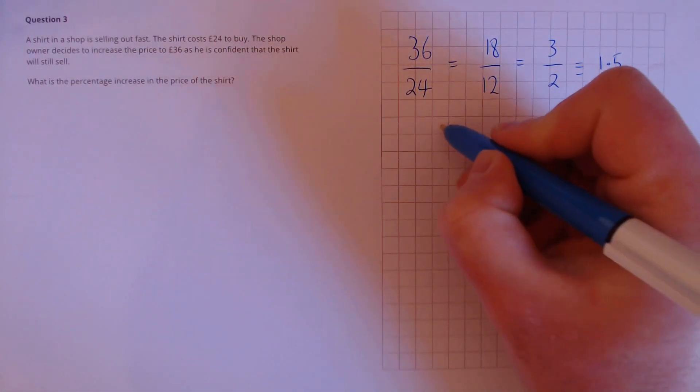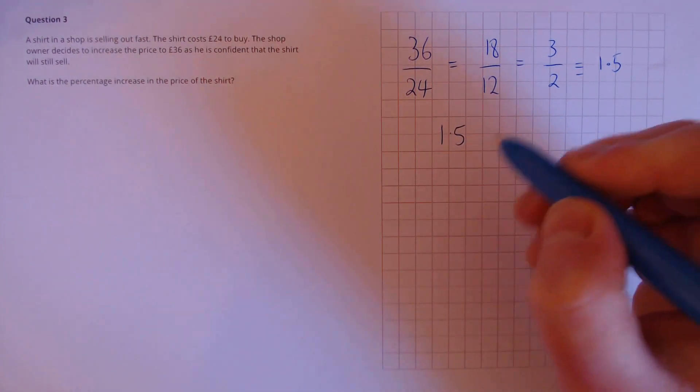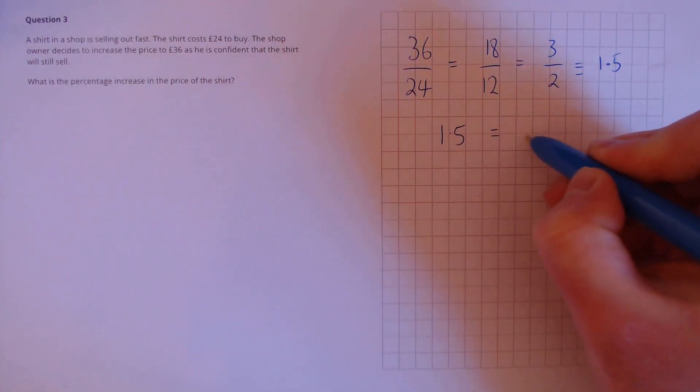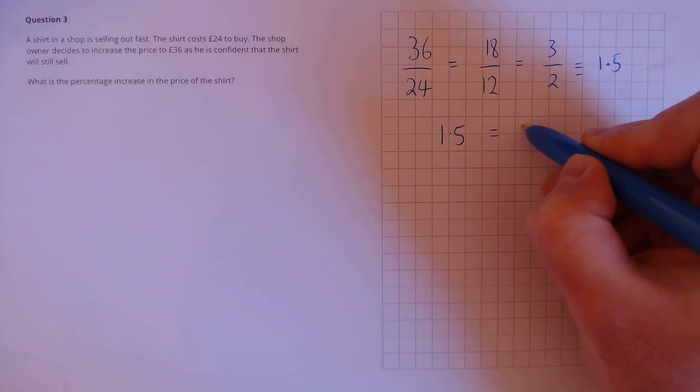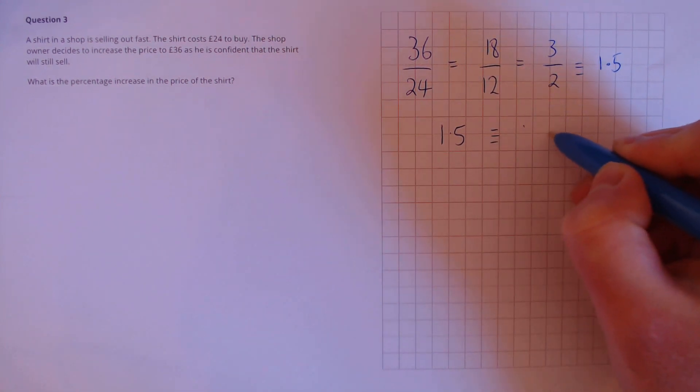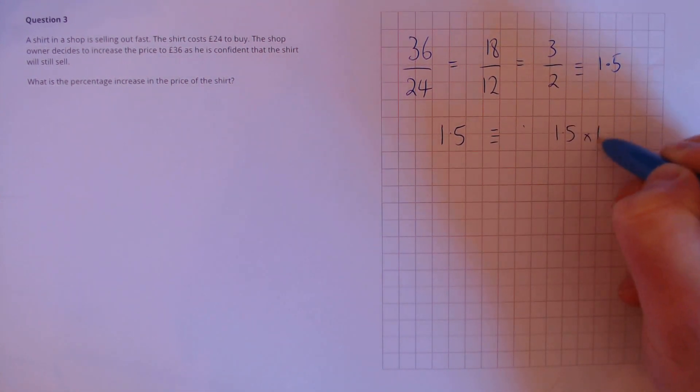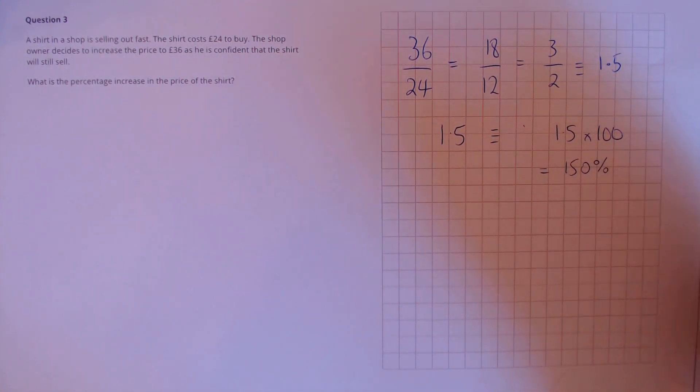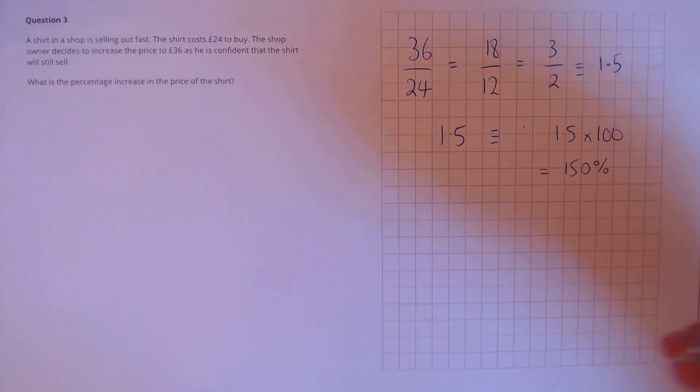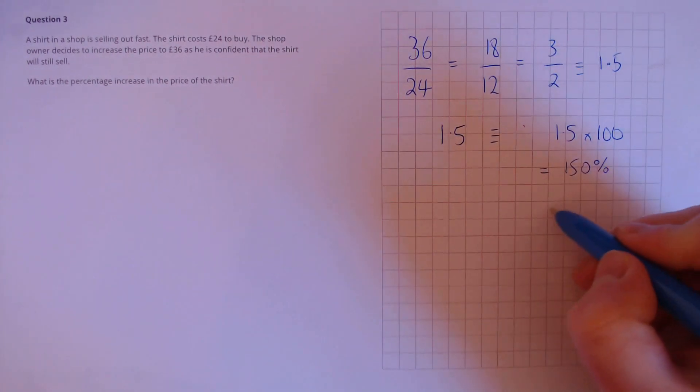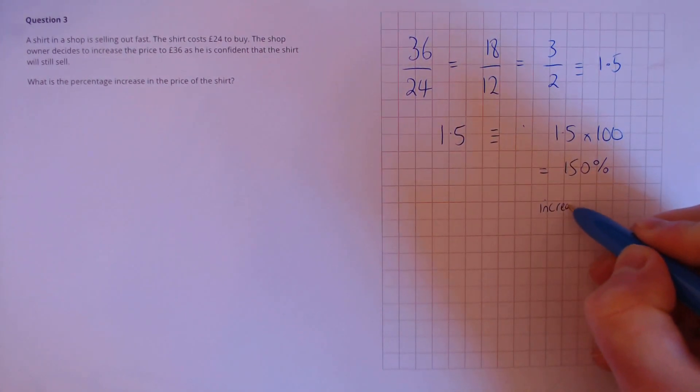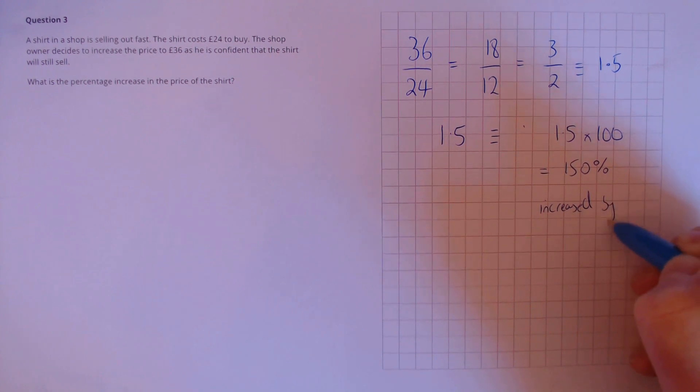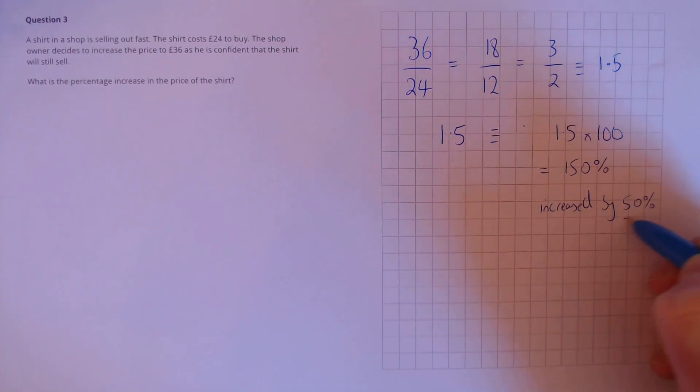So we need to figure out what 1.5 is as a percent. To do that we need to multiply by 100, which is 150%. If we originally start off with 100%, then this has increased by 50%.